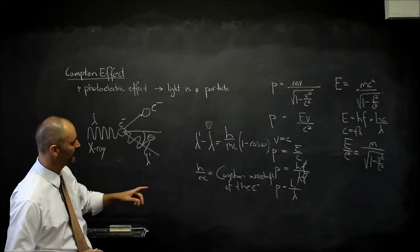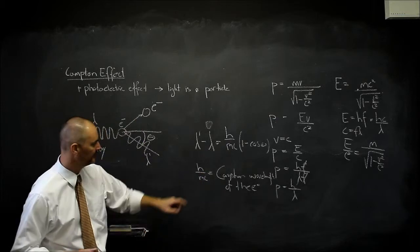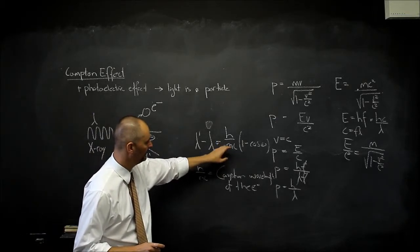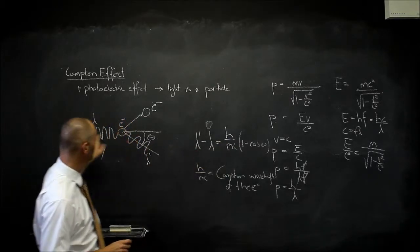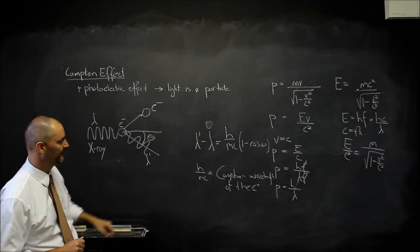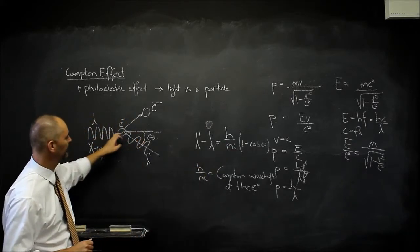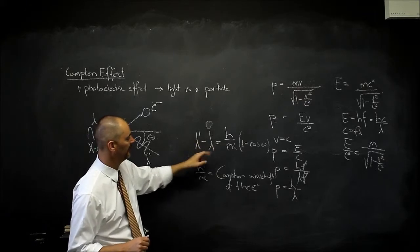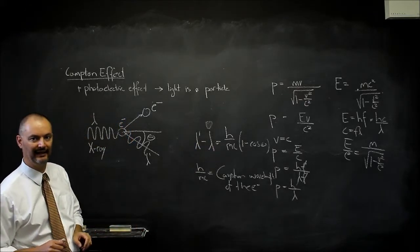You might ask: what if we put a proton in here? If we put a proton in, the mass will be much larger, but it's in the denominator, meaning the difference between the final and initial wavelengths will actually be less if we use the mass of a proton. If you scatter off of a proton, you'll get a much smaller difference between final and initial wavelength.